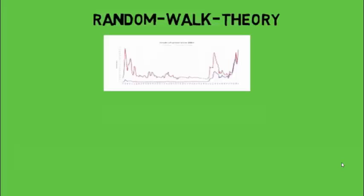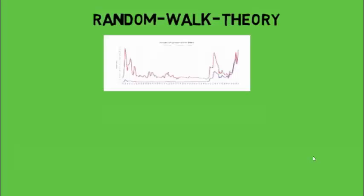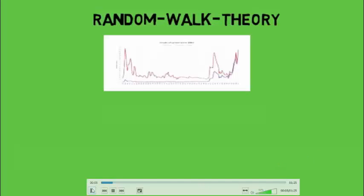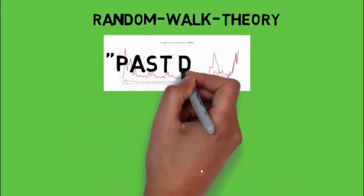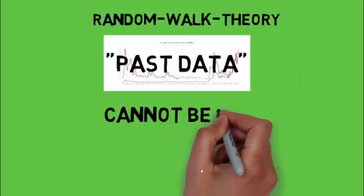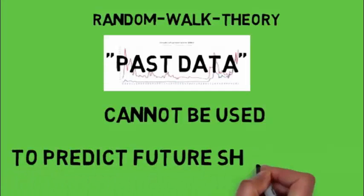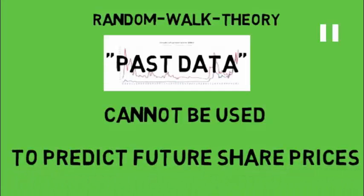Now in this video we will be discussing the Random Walk Theory. So what is the basic crux behind this theory? The past data of the stock, that is the present prices, or using the past data, we cannot predict the future prices of the stock. The past data cannot be used to predict the future share price of a stock.